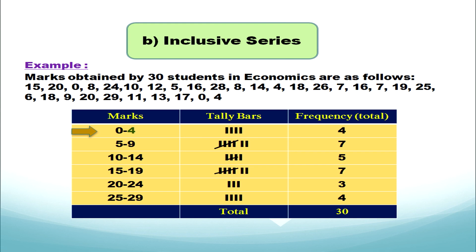In summary, the difference between exclusive and inclusive series: in exclusive series the upper limit is not counted in the class, whereas in inclusive series both lower and upper limits are counted. In exclusive series the upper limit of the previous class equals the next lower limit, whereas in inclusive series the upper limit of the previous class is not equal to the lower limit of the next class.